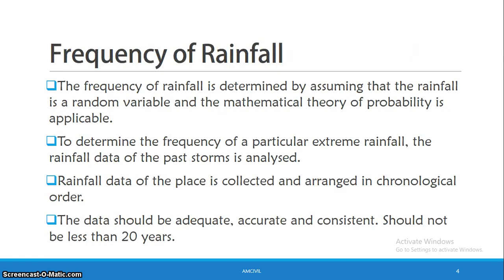Next one is Frequency of Rainfall. In our country, there are many months and seasons. In that season, obviously, rainfall occurs. However, if we consider this frequency, there are limits to the rainfall.